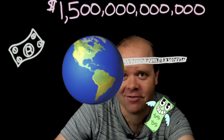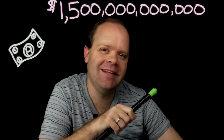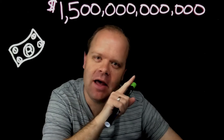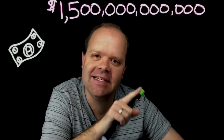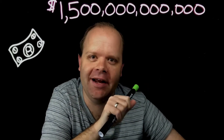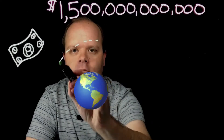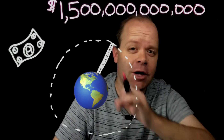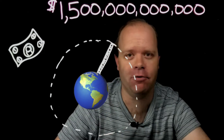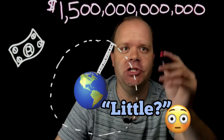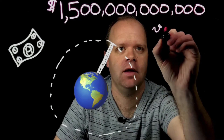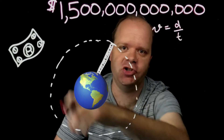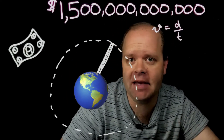That would be the earth here with a stack of money extending out like this. Let's say we wanted to find out how fast the tip of that debt tower sitting on the planet was actually rotating. In order to find out how fast our little money tower is going, we just need a simple formula: the distance it has to travel divided by the time it takes to travel that distance.